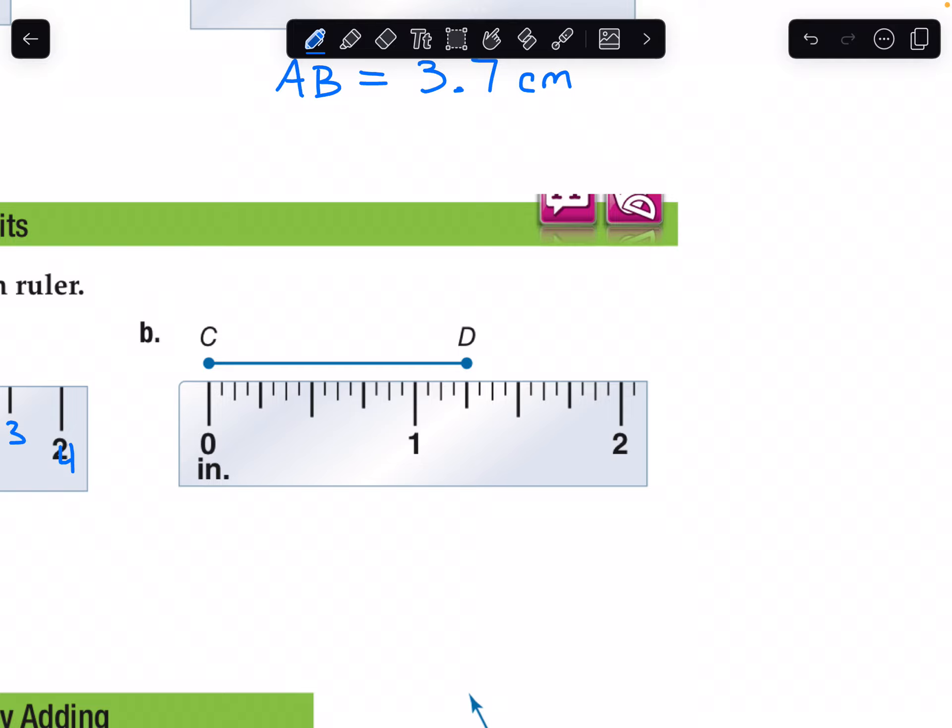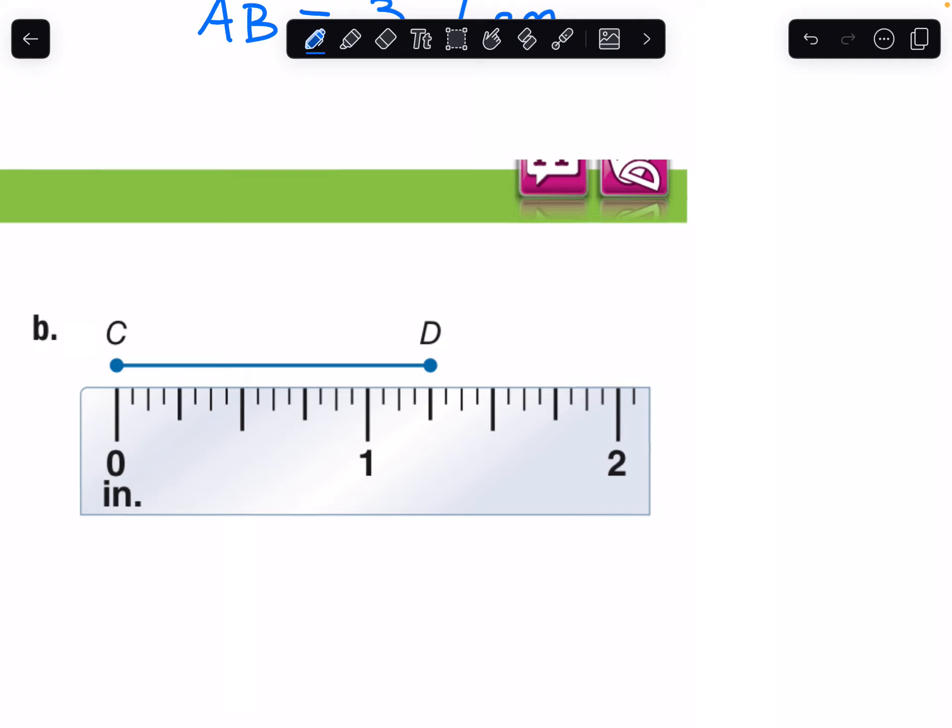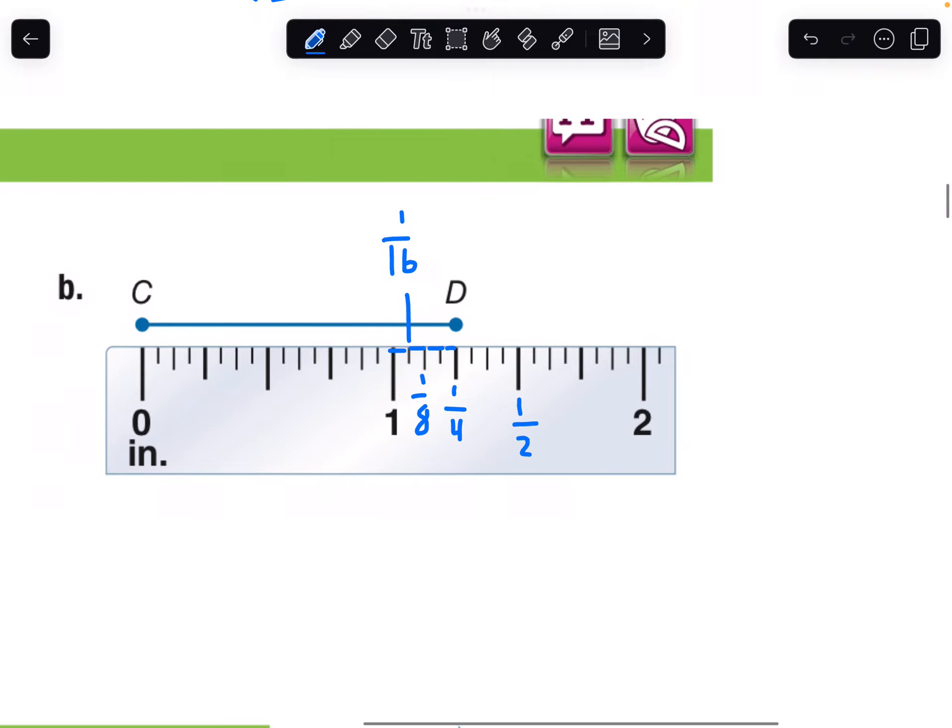In ruler B, C is on zero. D is here. Now there's a lot more tick marks. This halfway between is the half. Here is fourth. Here is eighth. And right here is one sixteenth. To get from one to D, I go one, two, three, four. So length CD is equal to one and four sixteenths, which equals one and one fourth inches again.